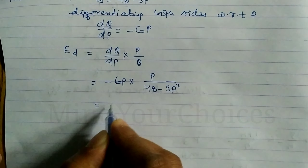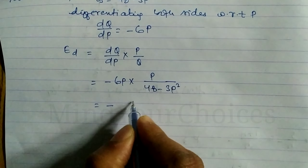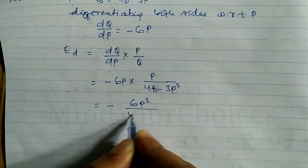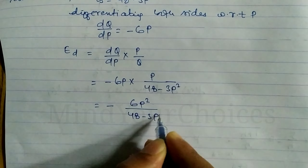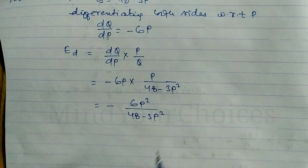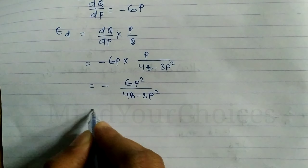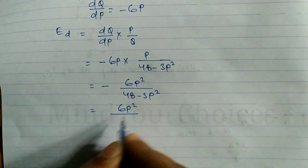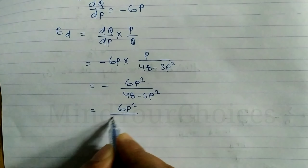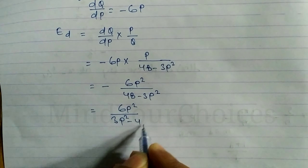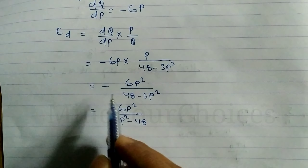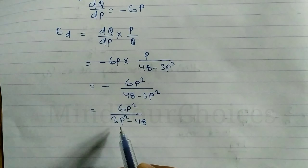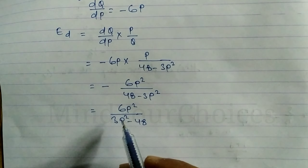Multiplying through, we get -6p² divided by (48 - 3p²). Multiplying numerator and denominator by -1 gives 6p² divided by (3p² - 48). This is the value of point elasticity of demand in terms of p.